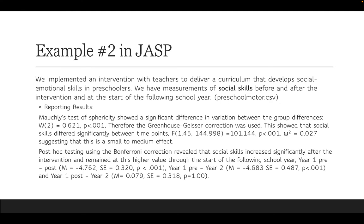Reporting results: Mauchly's test of sphericity showed a significant difference in variation between the group differences, W(2) = 0.621, p < 0.001. Therefore, the Greenhouse-Geisser correction was used. This showed that social skills differed significantly between time points, F(1.45, 144.998) = 101.144, p < 0.001. We report omega squared of 0.027, suggesting a small-to-medium effect, though perhaps a little closer to just small.